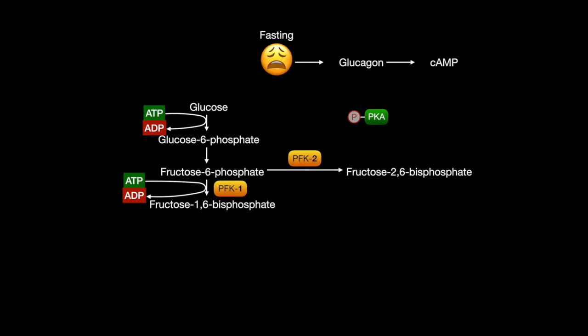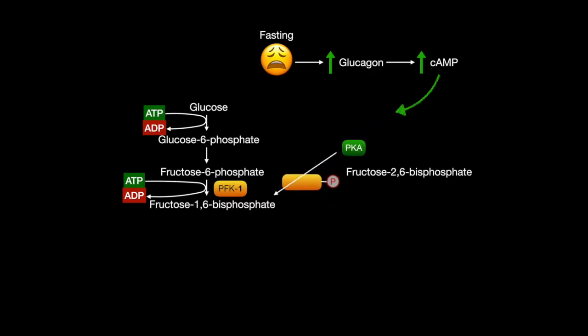Inversely, while fasting, glucagon levels are raised, increasing cyclic AMP, increasing protein kinase A activity, phosphorylating the enzyme into the active FBPase-2 form that turns fructose-2,6-bisphosphate into fructose-6-phosphate, decreasing glycolysis and simultaneously increasing gluconeogenesis instead.